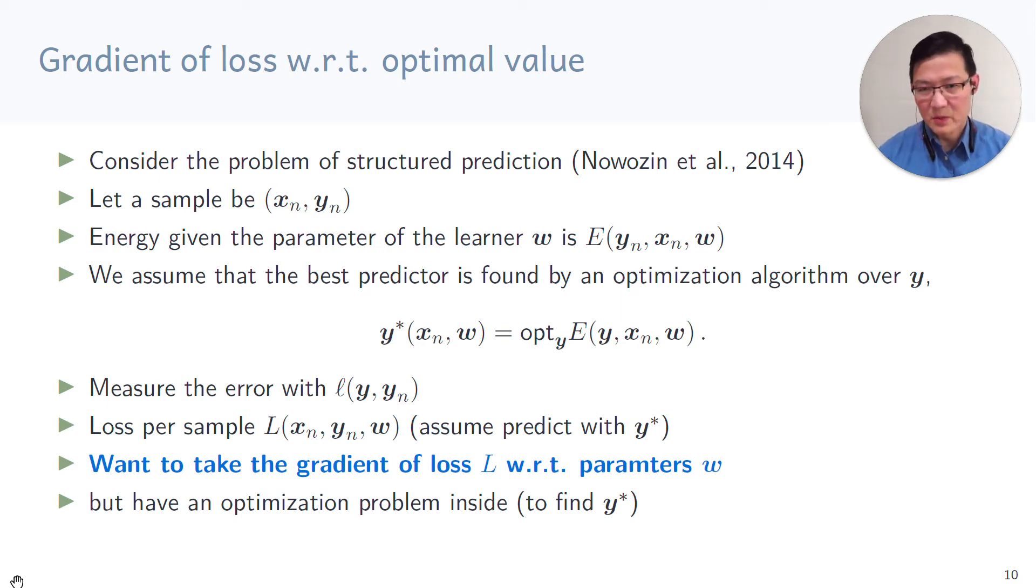Given any predicted label Y, we can measure the error by comparing to the true label y_n and use a loss little l. So therefore, we can summarize the loss per sample as something that takes in an example pair (x_n, y_n), and for a given parameter w. And we assume that for that parameter w, we solve the optimization problem over E and then compute that loss. Now, what we are interested in when training is actually we want to take the gradient of the loss big L with respect to the parameter w. What is tricky is that there exists an optimization problem in between the fact where we compute L and w, because w gives us y-star, which is the thing that we use to measure the loss. So the problem is somehow indirect.